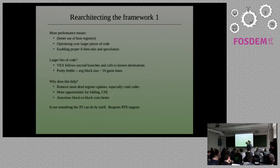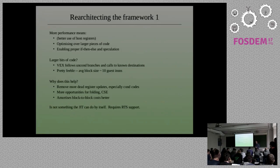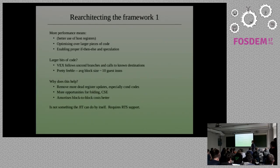Another thing we want to do is be more flexible about doing if-then-else in the intermediate representation. Currently the IR is kludged so that we never have to deal with two control flow paths coming together — this complicates register allocation and optimization. Longer blocks help, but having longer blocks is not something the JIT can do by itself; this is something the runtime system that surrounds and controls the JIT needs to help with.